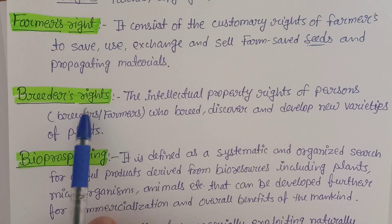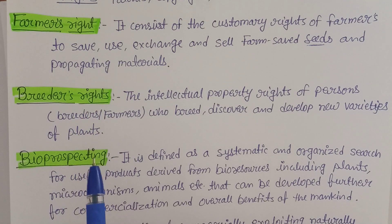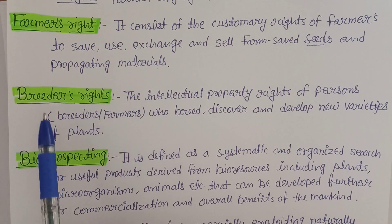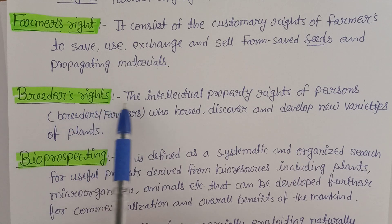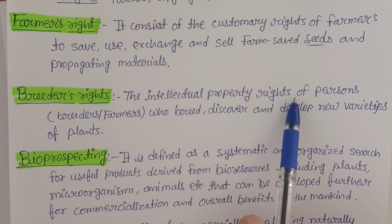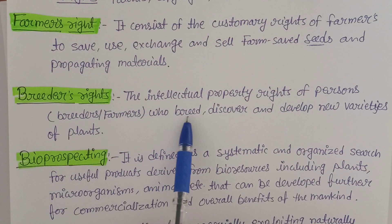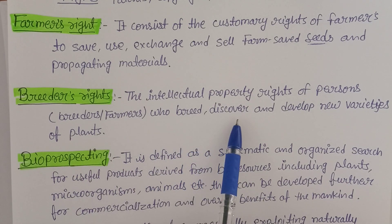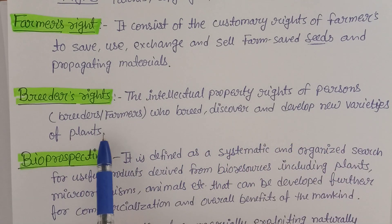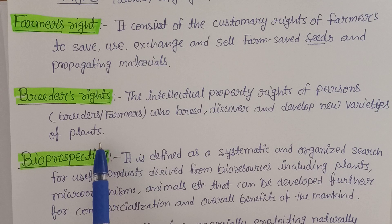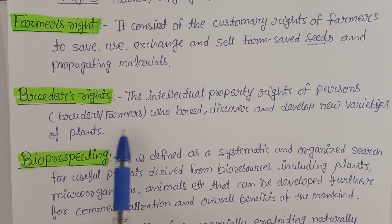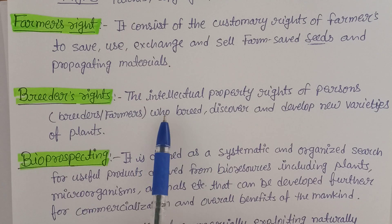The next term is breeders' rights. From breeding, breeders' rights have come. It refers to the intellectual property rights of persons, breeders, or farmers who breed, discover, and develop new varieties of plants — sometimes using different cultivation techniques like grafting, layering, and budding. If anybody gets any kinds of new variety, they can also protect that under IPR.